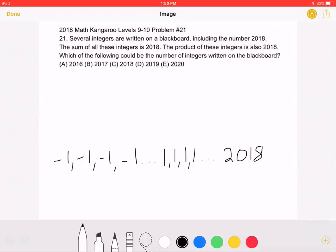Which of the following could be the number of integers written on the blackboard? A. 2016, B. 2017, C. 2018, D. 2019, or E. 2020.